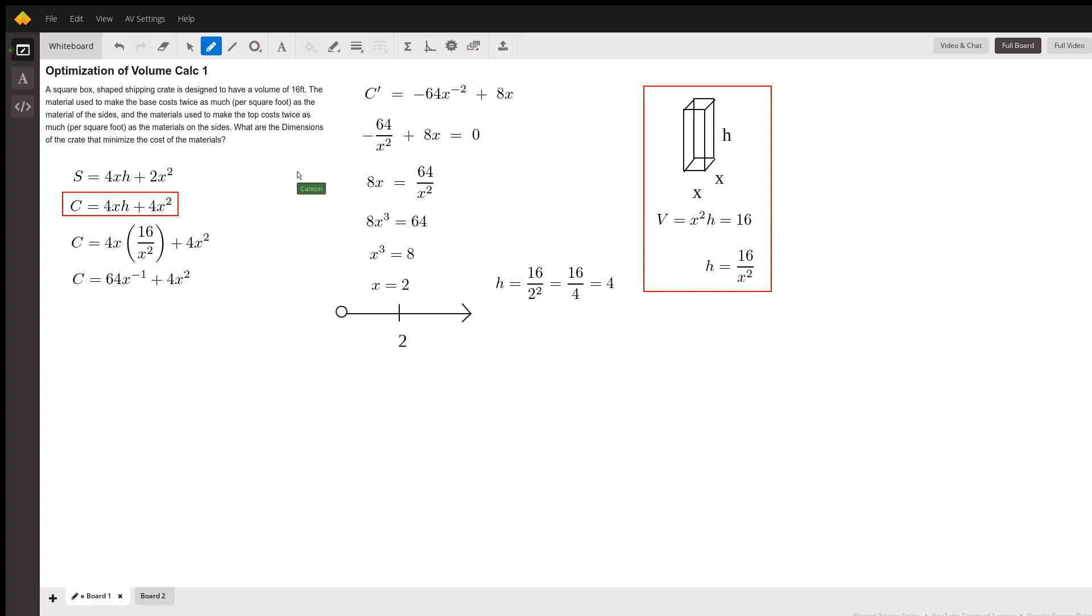What are we trying to accomplish? We want to minimize the cost of materials. The materials are essentially the surface area of this thing. If we start with surface area, there's four faces—front, back, left, and right—that are all x by h rectangles. We got four sides that are x by h, and then the top and bottom that are x squared. So surface area, we've got four sides that are x by h and two sides that are x squared.